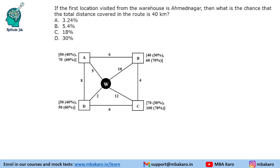Question 4: If the first location visited from the warehouse is Ahmednagar, what is the chance that the total distance covered is 40 km? Since the first location visited is Ahmednagar, Ahmednagar must have demand of 70 — that is already known. This is conditional probability where the previous information is already known. The route is known to start from A, and after A it has to be C — there is no other alternative route. So A and C are already given; we focus only on the remaining part to find the probability.